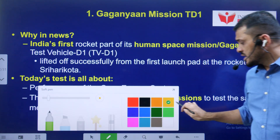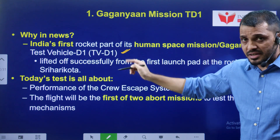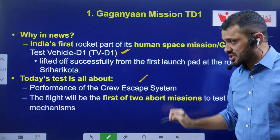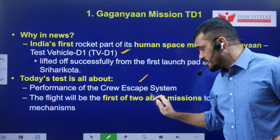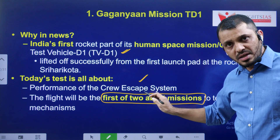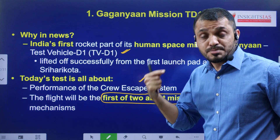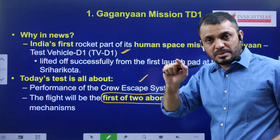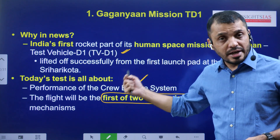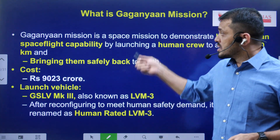Today we tested the test vehicle TV-D1, as well as the crew escape system. This will be the first of two abort missions. Abort mission means in case there is any fault, they should be able to abort it, and in spite of the abortion of the mission, the crew should be able to successfully land. The second abort mission will also be tested without crew. And the third one is going to be with crew.